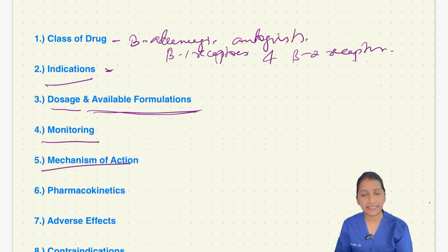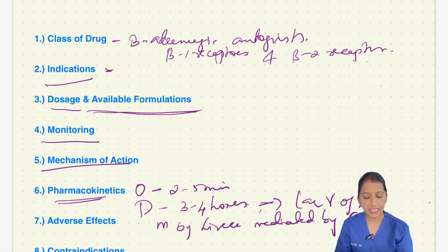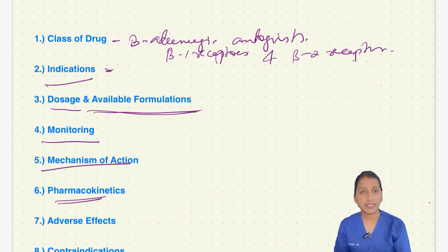Next, coming to pharmacokinetics. The onset of action after an IV injection is 2 to 5 minutes with a duration of action of 3 to 4 hours. Metaprolol has a large volume of distribution. It is metabolized by liver mediated by CYP2D6 enzyme. Excretion is mainly in the urine.